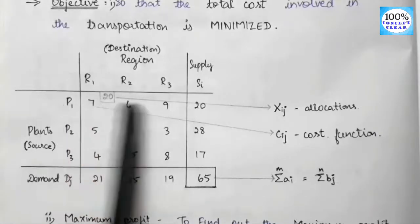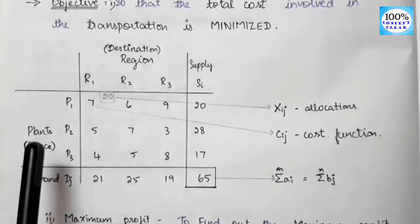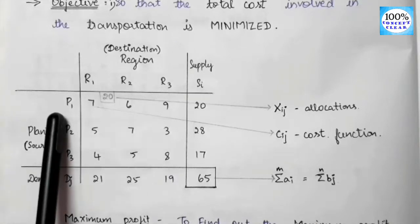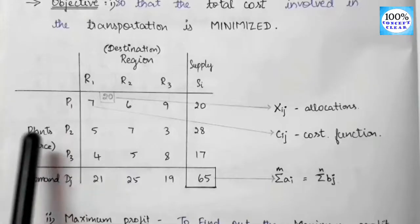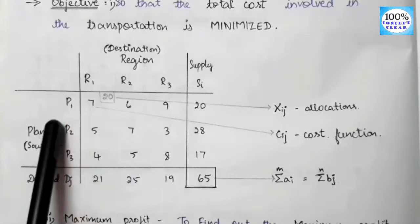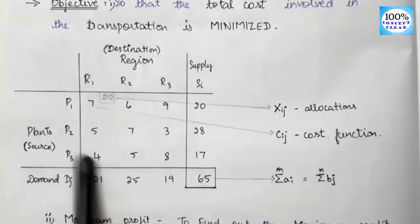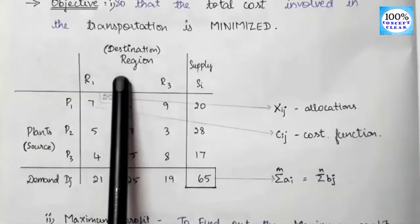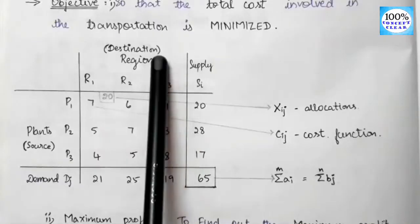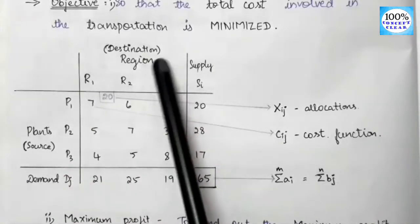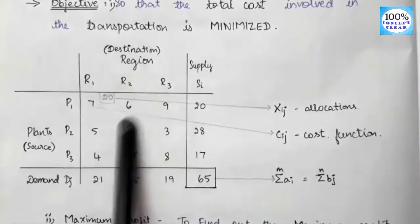Let's look at the plant in row-wise — that is the source, that is the manufacturing area. There are three plants: P1, P2, P3. The goods are manufactured in these three plants. There is a region in column-wise — that is the destination, that is the customers. The regions are R1, R2, R3.